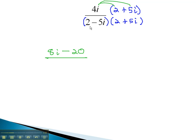In the denominator, we only have to multiply the first and last terms. 2 times 2 is 4, and negative 5i times positive 5i is negative 25i squared. However, the i squared changes the negative into a positive, because i squared is negative 1. We now have 4 plus 25, which is 29.